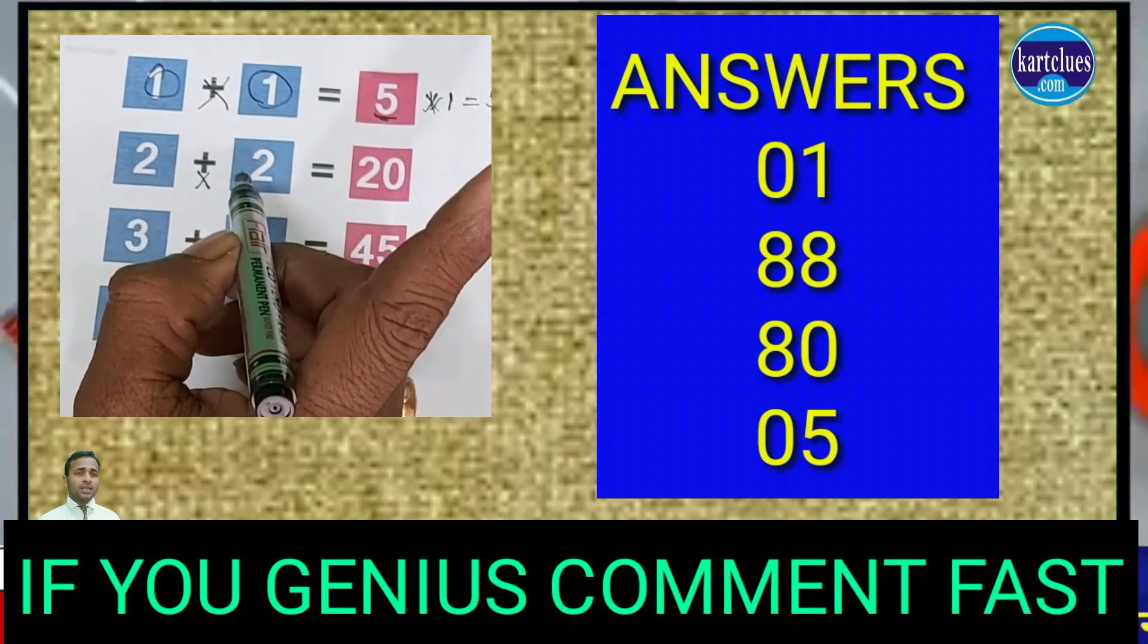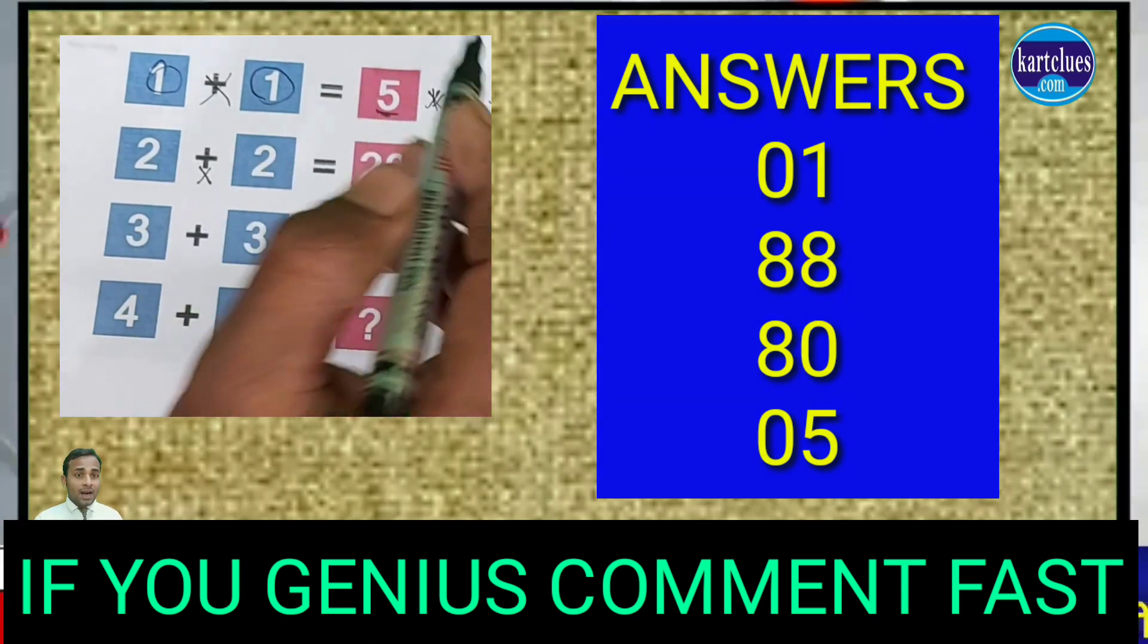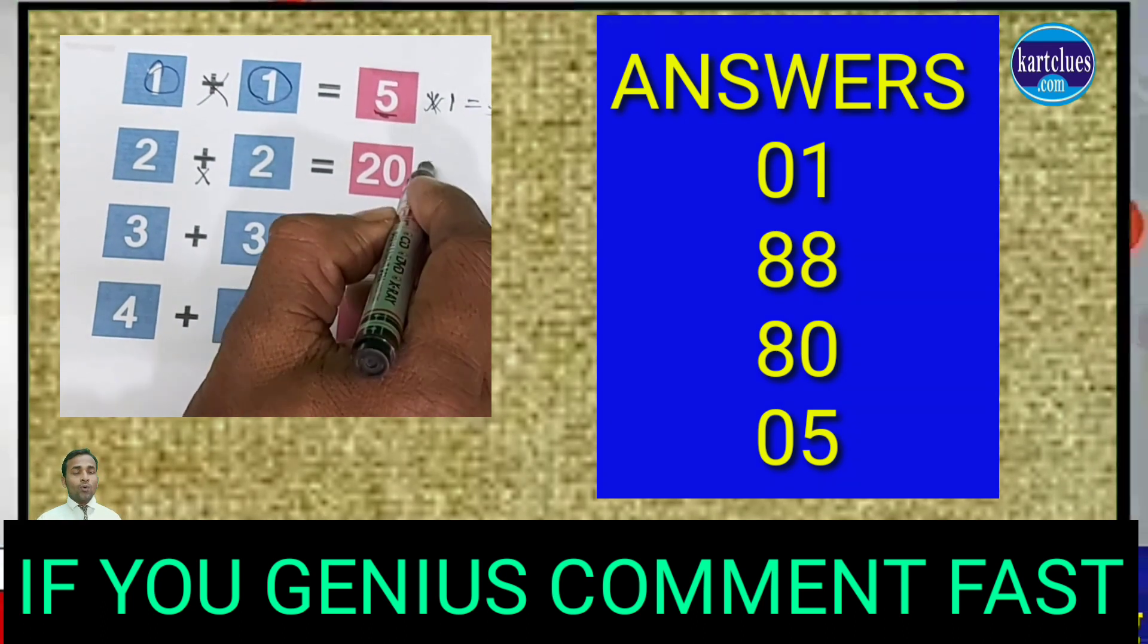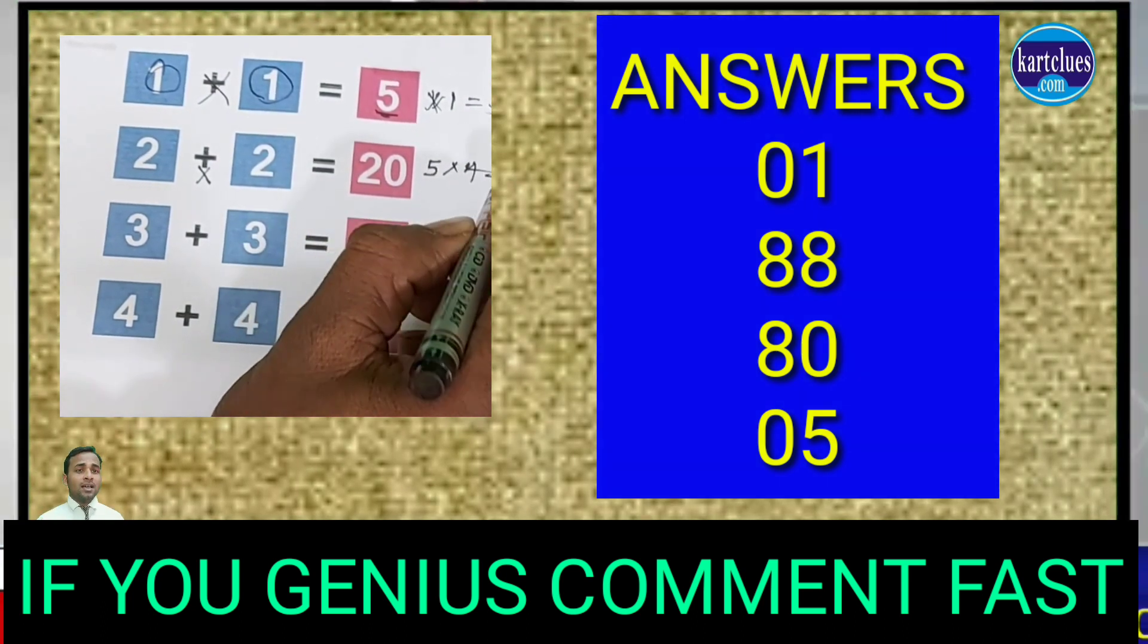2 into 2 is 4. 2 into 4, and assume 5 is here. You should do 5 into 4 is 20.